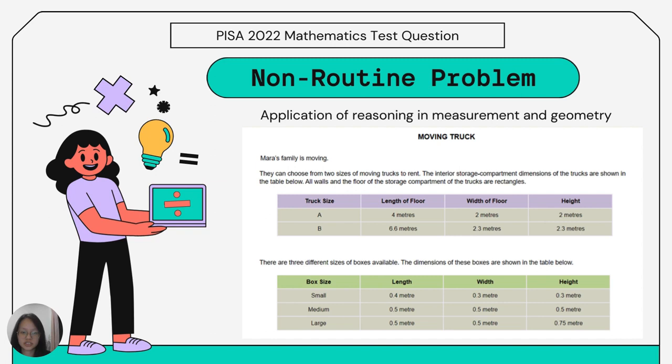Mara's family is moving. They can choose from two sizes of moving trucks to rent. The interior storage compartment dimensions of the trucks are shown in the table below. All walls and the floor of the storage compartment are rectangles.